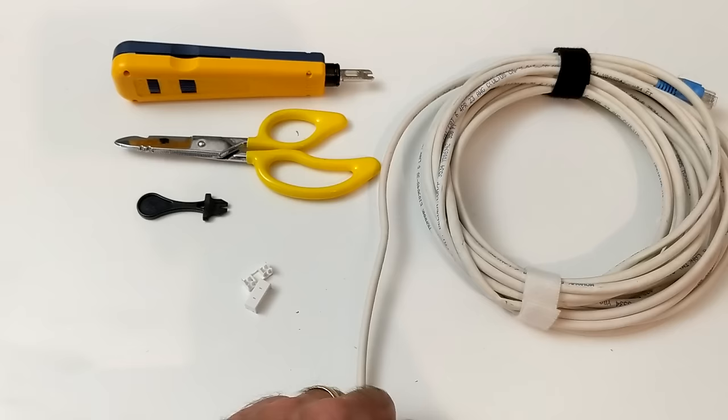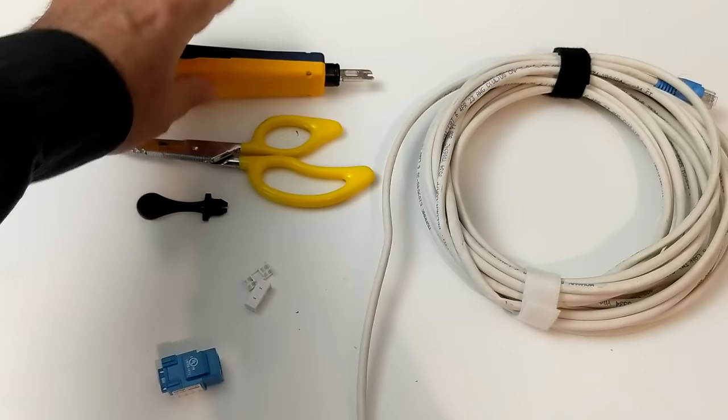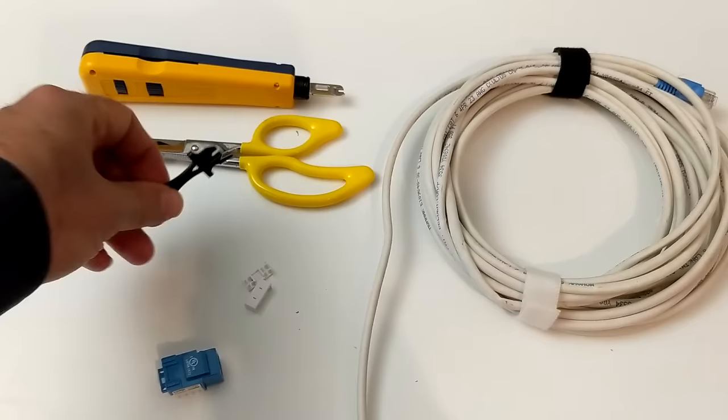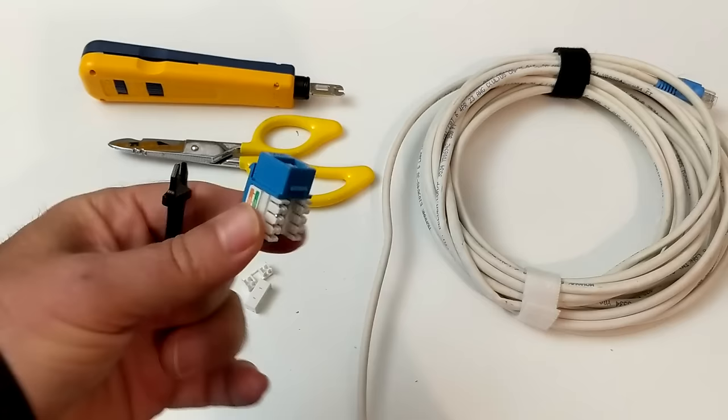The tools you'll need are a pair of lineman snips and a 110 punch down tool. However, if you don't have these things, you probably can get by with a pair of household scissors and these little plastic tools that have been coming with the jack inserts. These little things have been coming in the same kit lately.